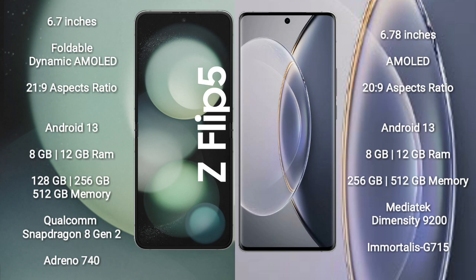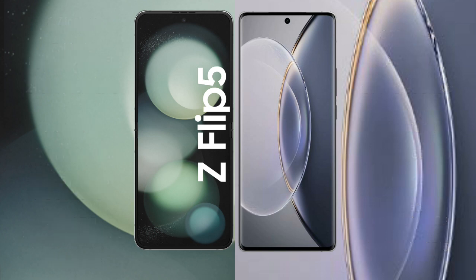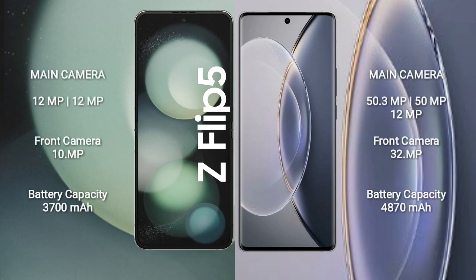Samsung Galaxy Z Flip 5 features a dual rear camera setup of 12MP plus 12MP, and a 10MP front camera. Vivo X90 Pro features a triple rear camera setup of 50.3MP plus 15MP plus 12MP, and a 32MP front camera.